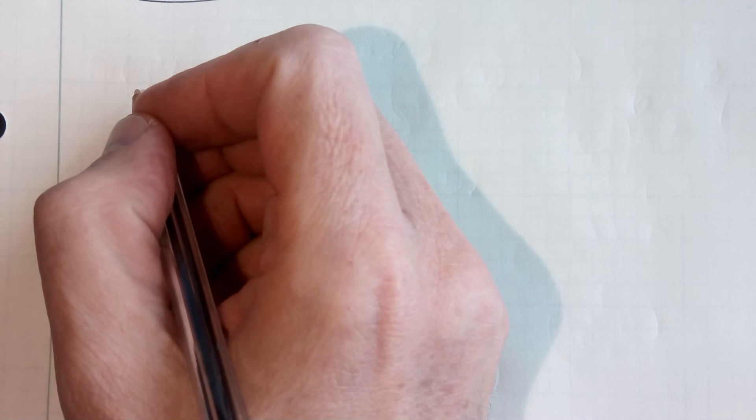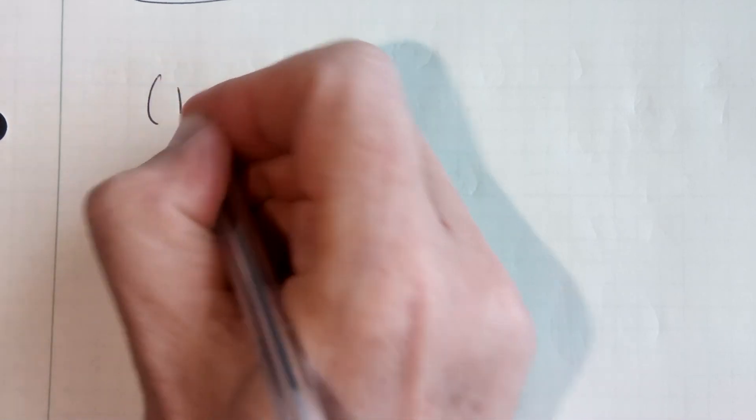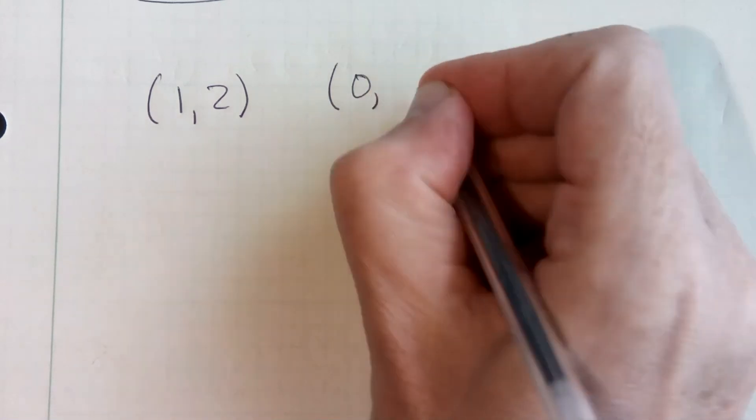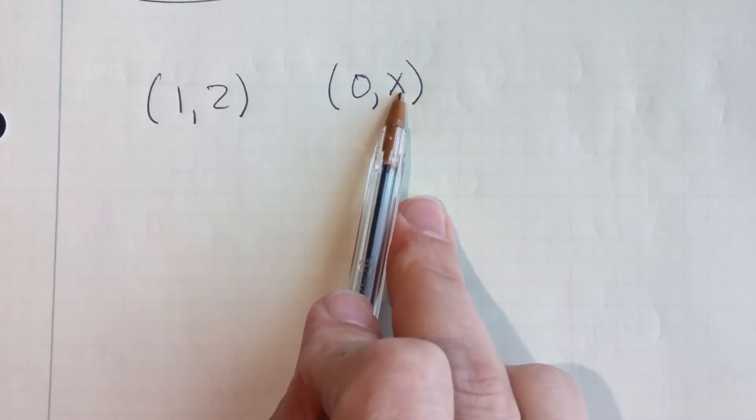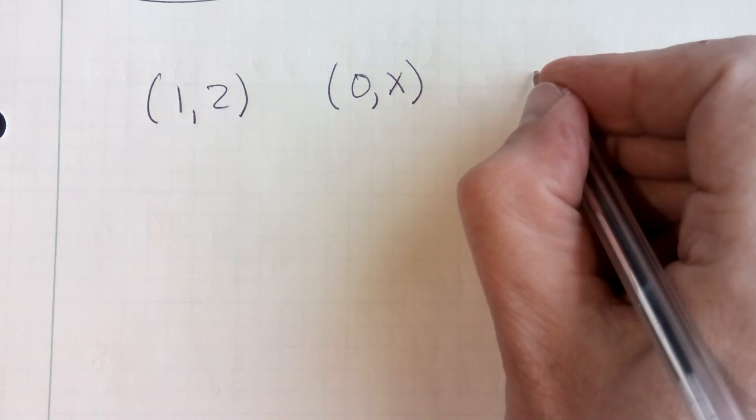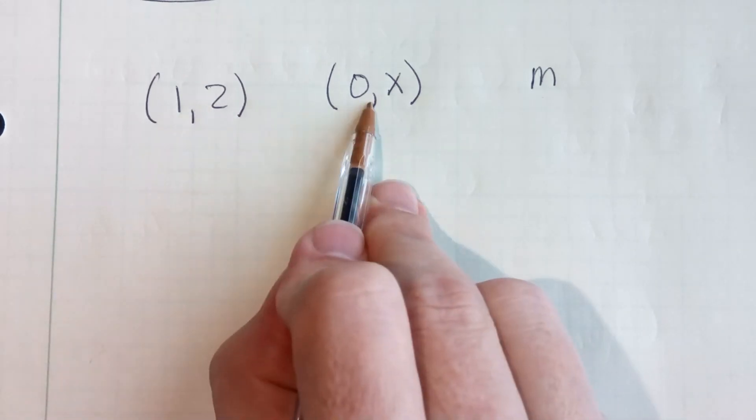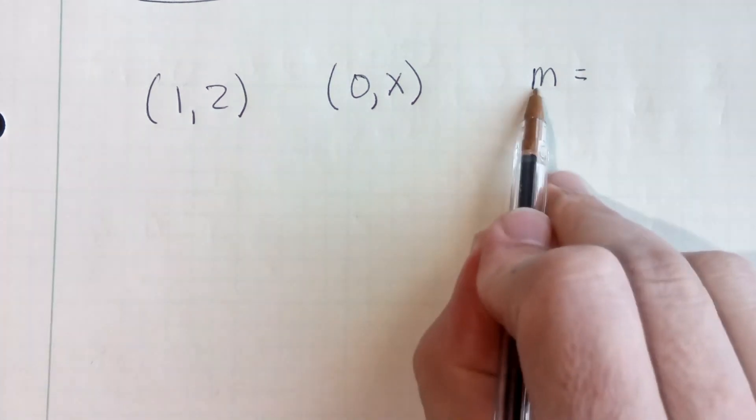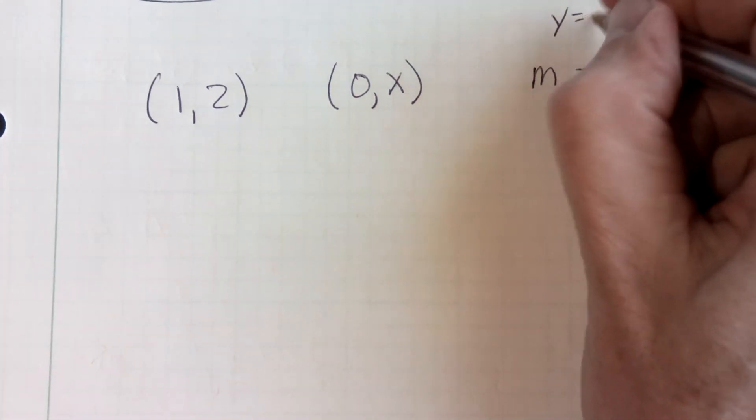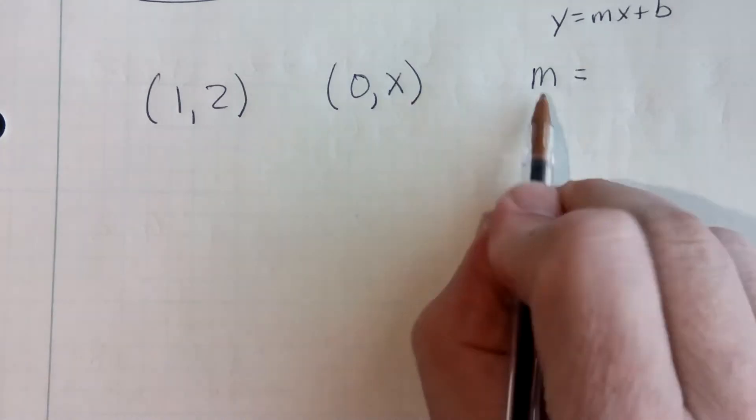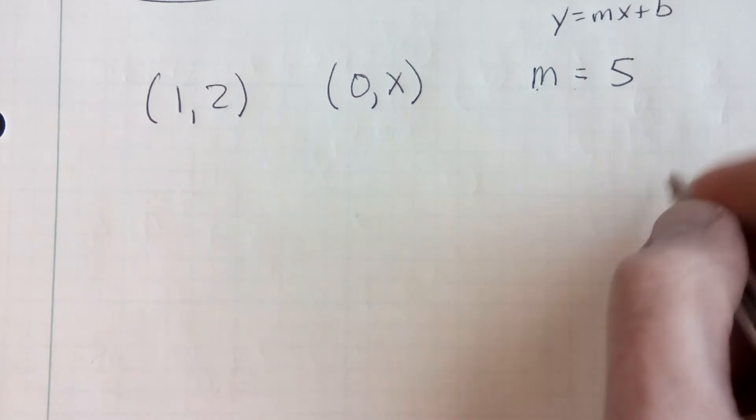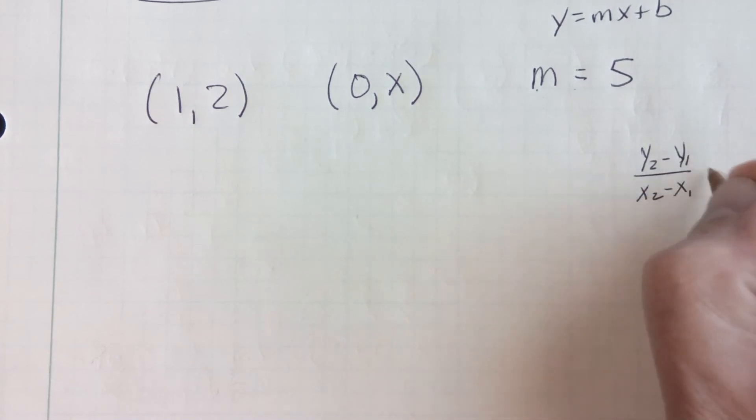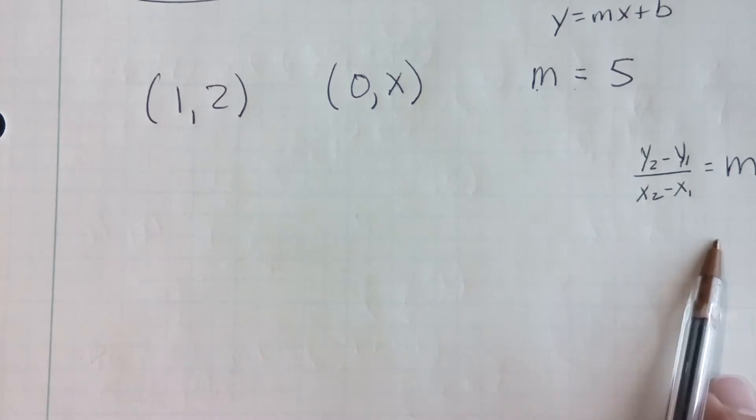What they're going to do is they're going to say, all right, let's say you have two points. You have the point (1,2), and then you have another point that has an x value of 0 and some y value we don't know. We want to find this y value. Right now we can't do it. But let's say we know the slope of the line that goes through those two points. Let's say that slope, and slope I'm going to write as m because m refers to slope in the equation y equals mx plus b. So let's say the slope is a 5. Okay. What I'm going to do is I'm going to use the slope formula. I'm going to use the y2 minus y1 over x2 minus x1 equals m or the slope.